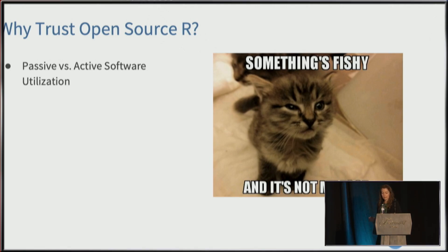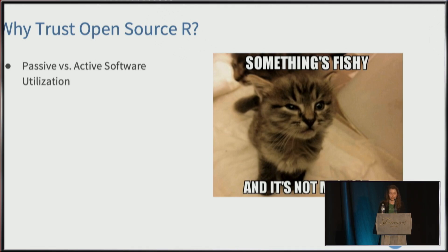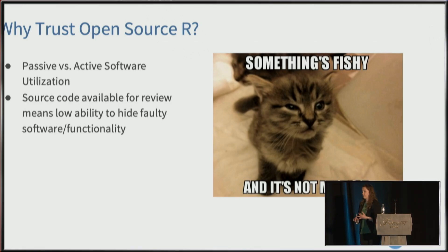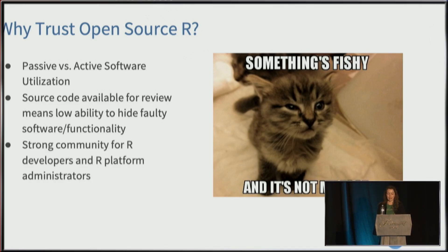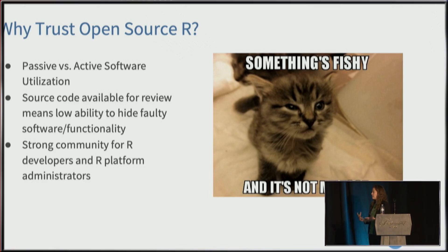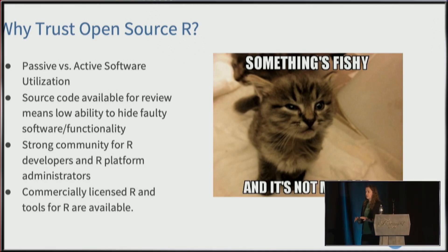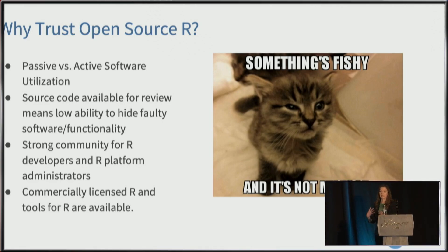Active software utilization is more the open source mentality — the code is all there, and you can go in, look at the code, and make sure it'll do what you need. It is a higher investment, but with open source technology it's really hard to hide faulty software — there's nowhere to hide. There's also a strong community for R developers and platform administrators, and there are commercially licensed R tools available that can help assuage legal concerns.